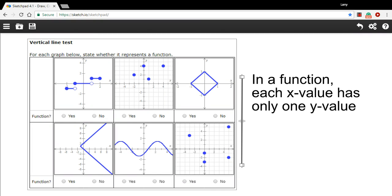In this problem, we're being asked to use something called the vertical line test to determine whether these things on these graphs represent functions or not.